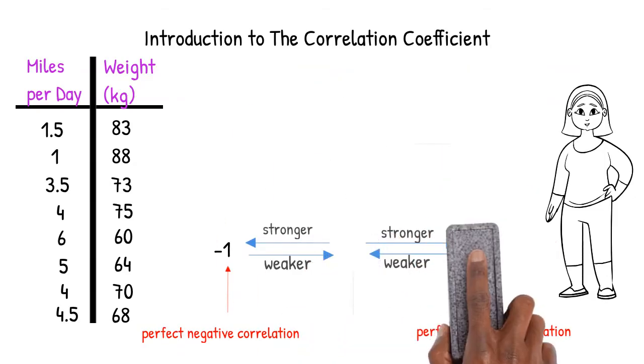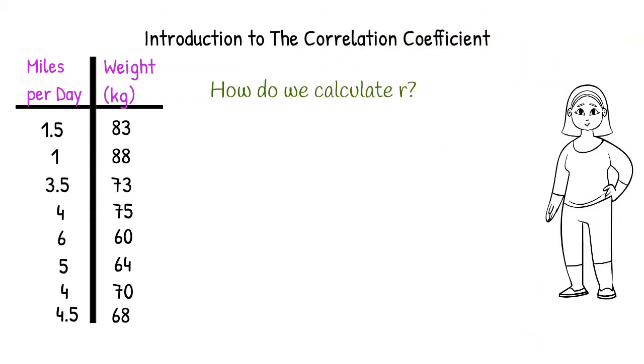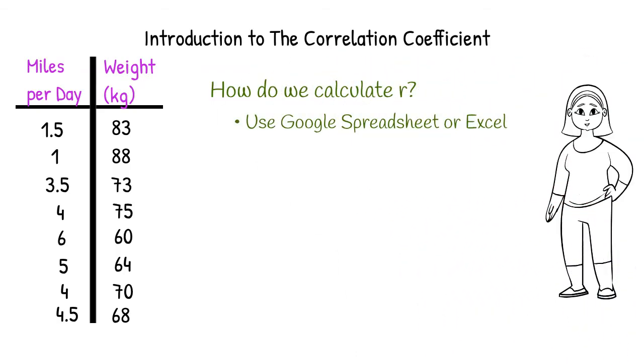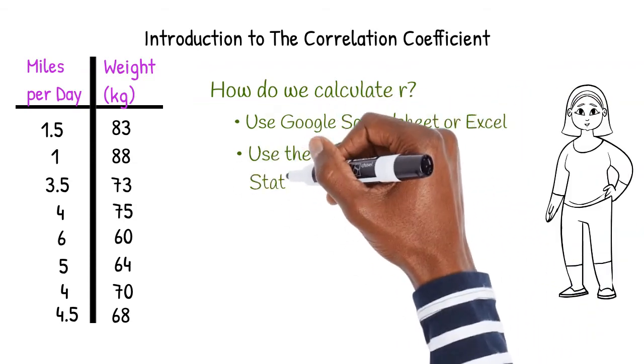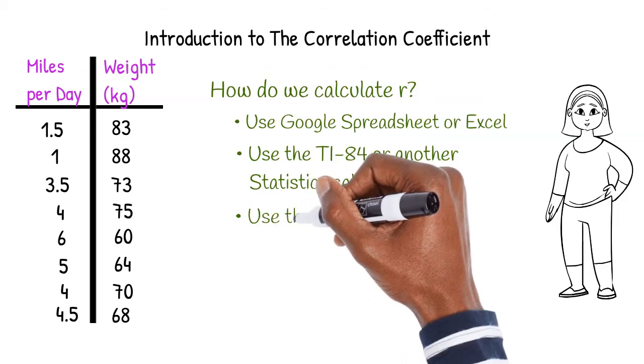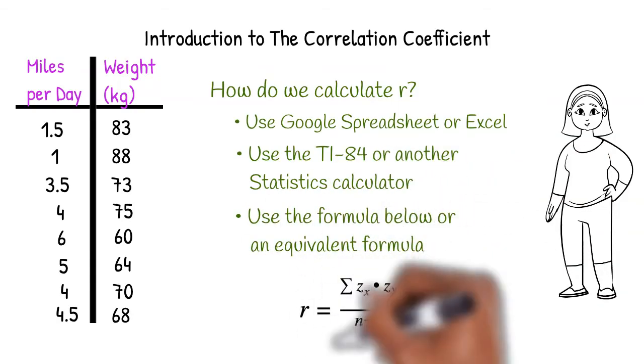So now, you must be wondering, how do we calculate the correlation coefficient, r? There are quite a few options, some of which I'll explain in our upcoming videos. We can use a Google spreadsheet or Excel. We can use the TI-84 calculator or another calculator with statistics capabilities. We can use the formula below utilizing z-scores of our data or other equivalent formulas.